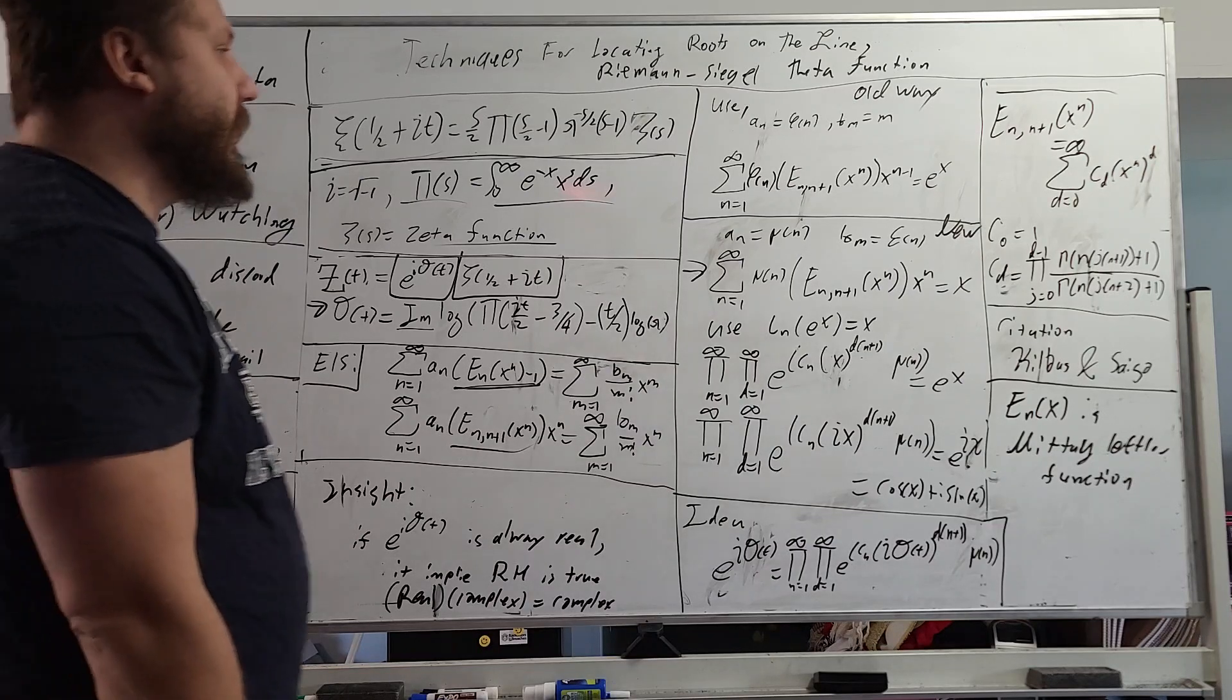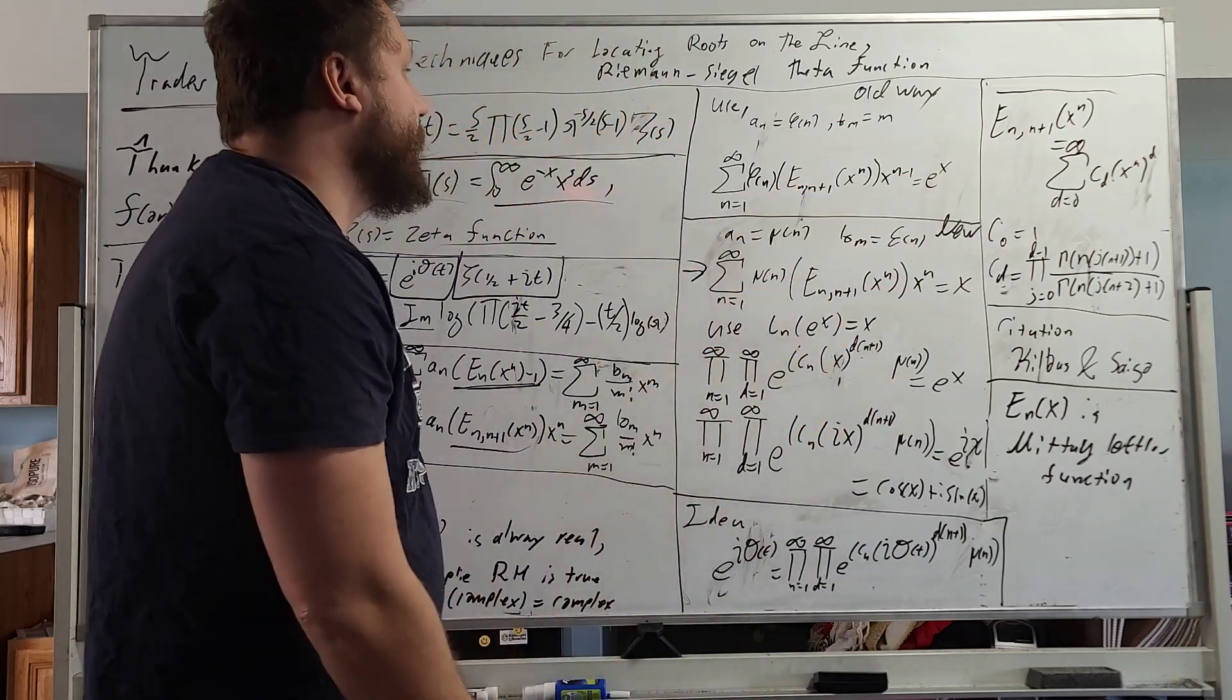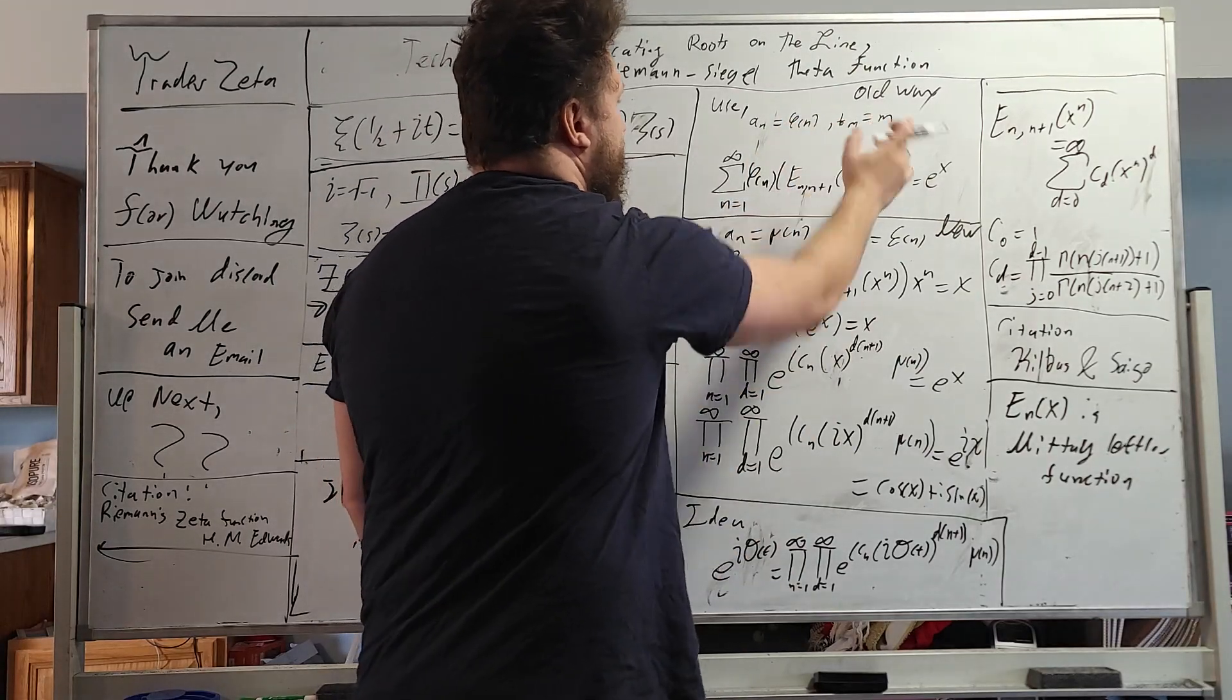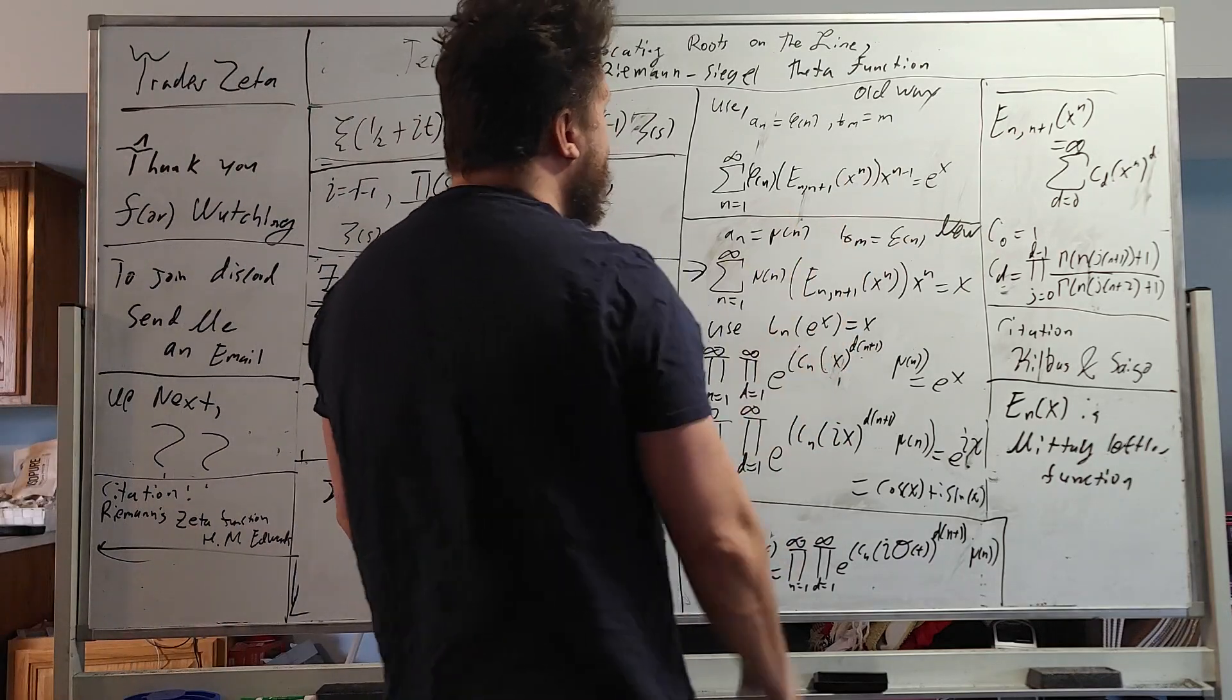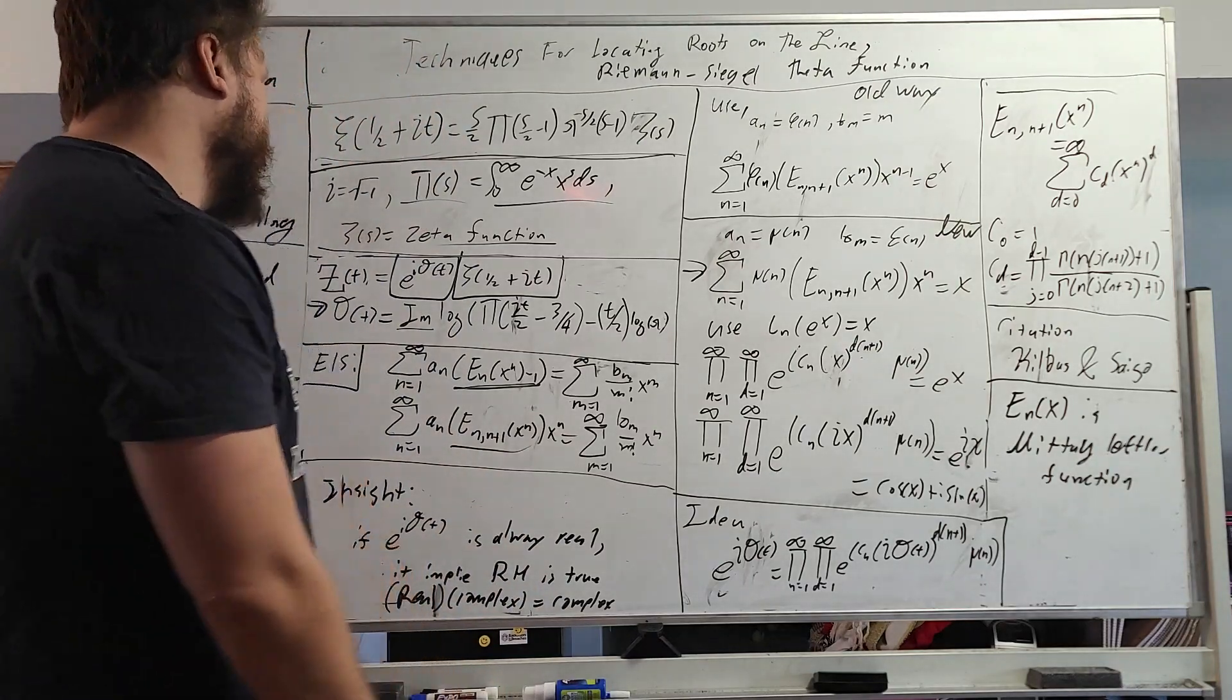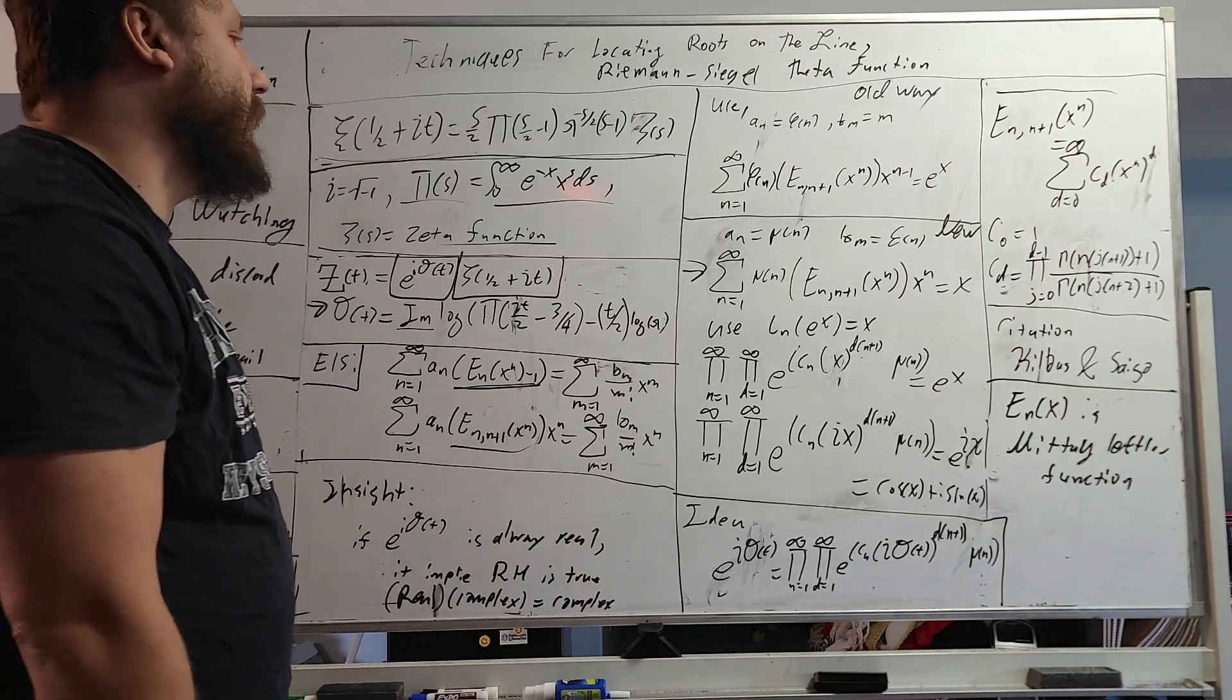So let's talk about the old way that we would approach this problem. You have E to the X, and you would have all of this right here. So you plug in A sub n is Euler's Totient function, B sub m equals m, and that would all be very nice and dandy. But the problem is that it's a sum series, and we really can't do much with the sum series. If we just put this i theta in there, it might be quite cumbersome.